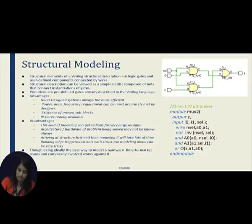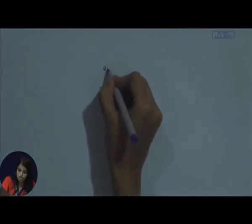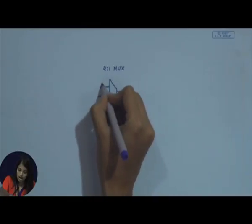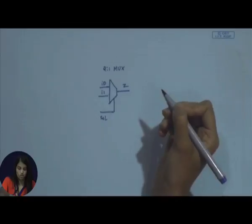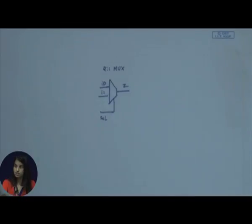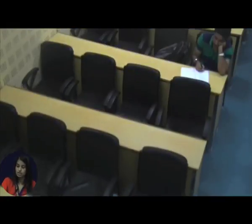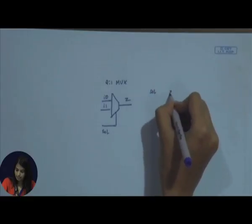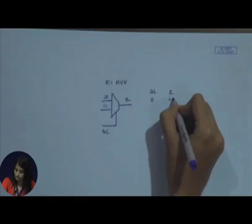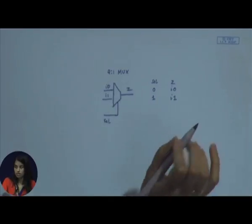A 2-to-1 multiplexer looks something like this. We have 2 inputs and an output and 1 select line. We have i0 and i1 as inputs, select line as input, and we have output z. The module I have defined is called mux2. I have z as output, i0 and i1 as inputs, and a select line. The functionality of this mux is: when the select line is 0 we get output i0, and when the select line is 1 we get output i1.